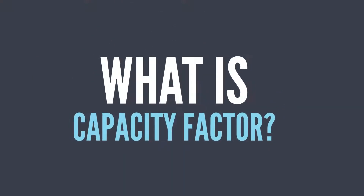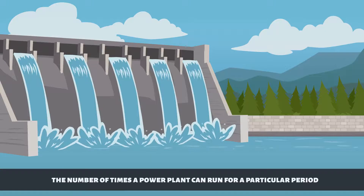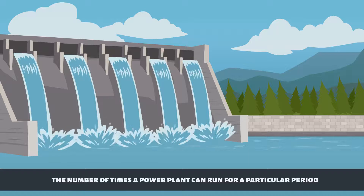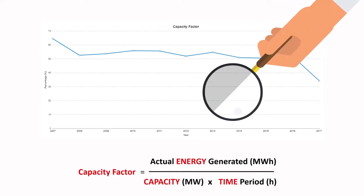What is capacity factor? Capacity factor is the primary determinant of the number of times a power plant can run for a particular period. It is expressed as a percentage and is usually calculated by dividing the actual electrical energy output over a given period by the maximum possible electrical energy output over the same period.